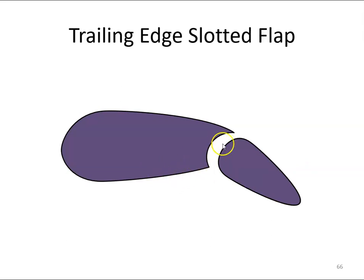This slot permits high pressure air from underneath the wing to flow up into the lower pressure area above the wing. The air accelerating through the gap speeds up the upper surface boundary layer, thereby delaying flow separation and achieving a higher lift coefficient. Slotted flaps therefore give a greater increase in lift and less drag than simple and split flaps of comparable size.